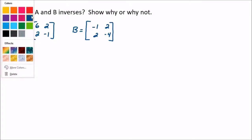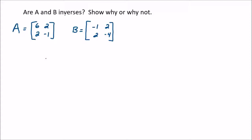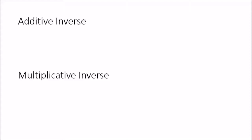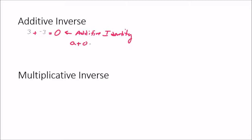Before we get too deep into this, I want to talk about the word 'inverse' and relate it to some knowledge you may have from before. The additive inverse: if we have numbers like 3 and negative 3, we say they're additive inverses of each other because if we add them together we get 0, and 0 is the additive identity. If I add anything plus 0 I get that thing back — that makes 0 the identity. So if two numbers add together to give the identity, which is 0, then they're inverses of each other.